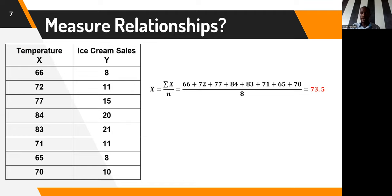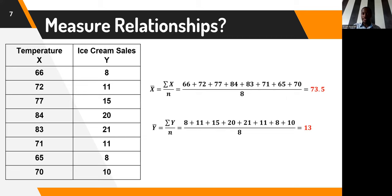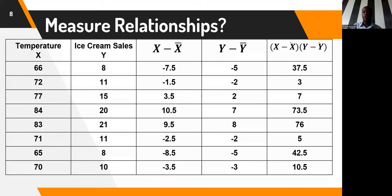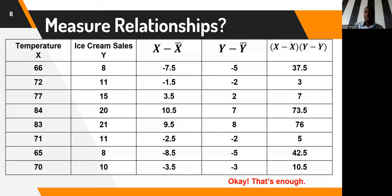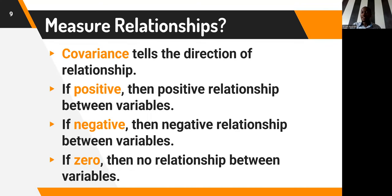Let's say we have two variables: temperature and ice cream sales, where temperature is x and ice cream sales is y. We want to look at how these two variables are associated, so we calculate the covariance. We find the deviation — x minus its mean and y minus its mean. The mean of x gives us 73.5 and the mean of y gives us 13. We then create additional columns for the deviations and find the cross product. Covariance tells us the direction of the relationship: positive means positive relationship, negative means negative, and zero means no relationship.